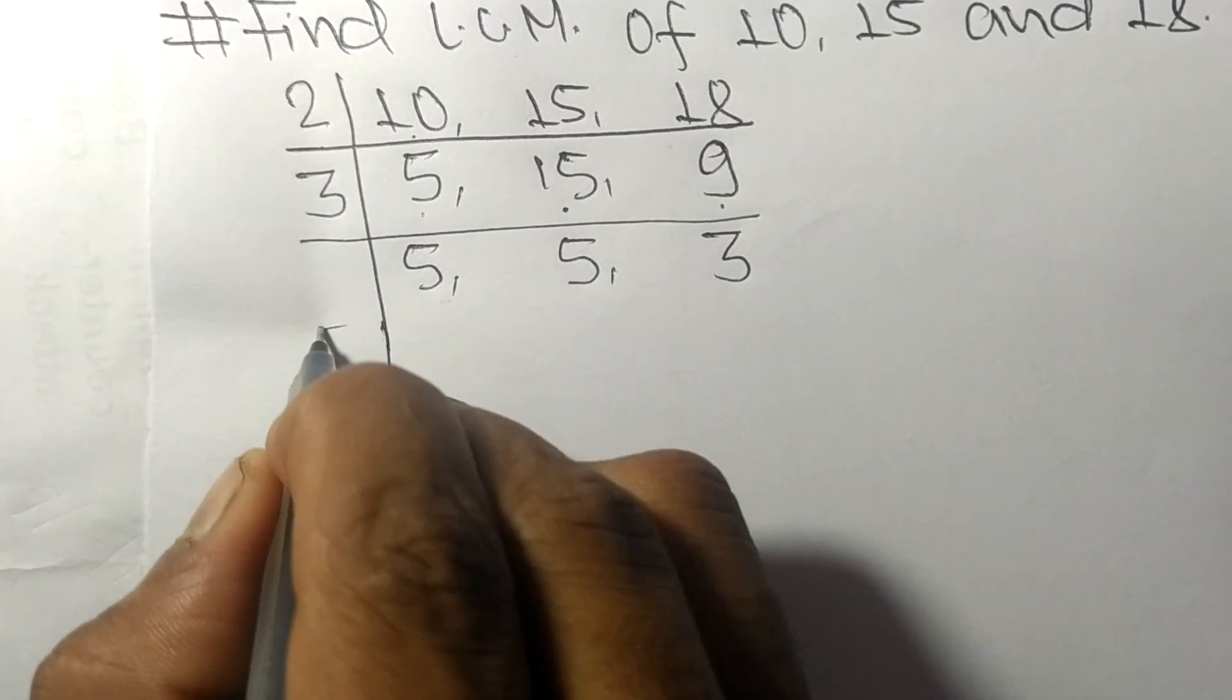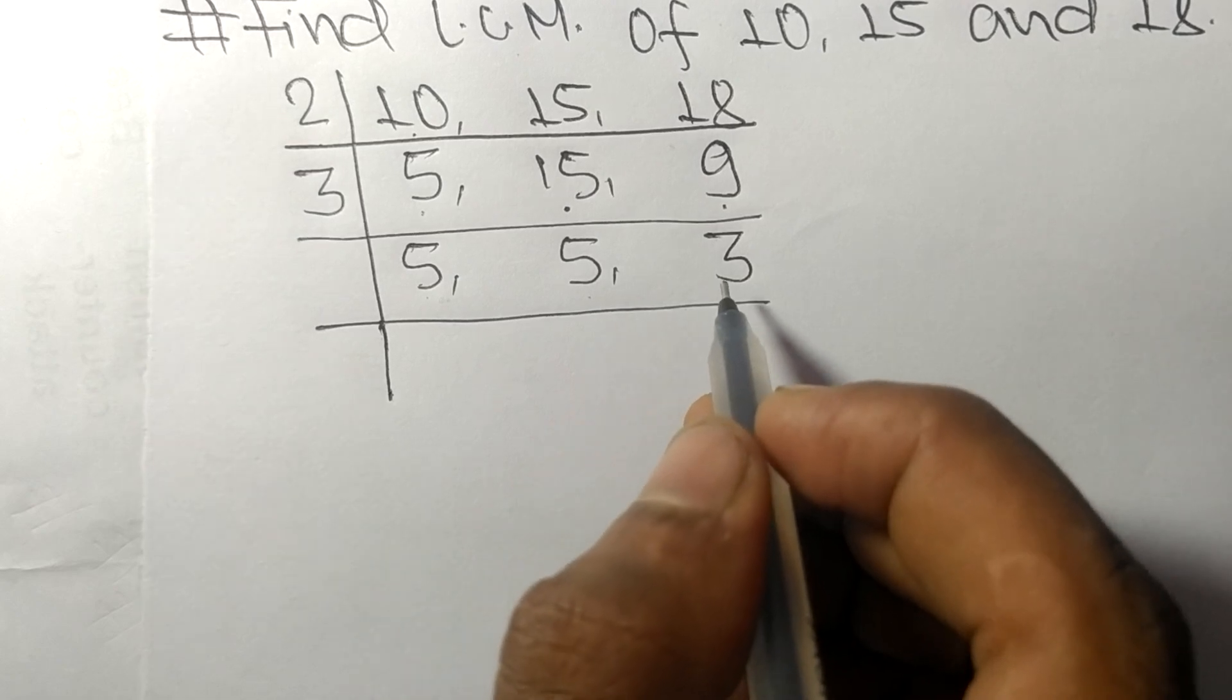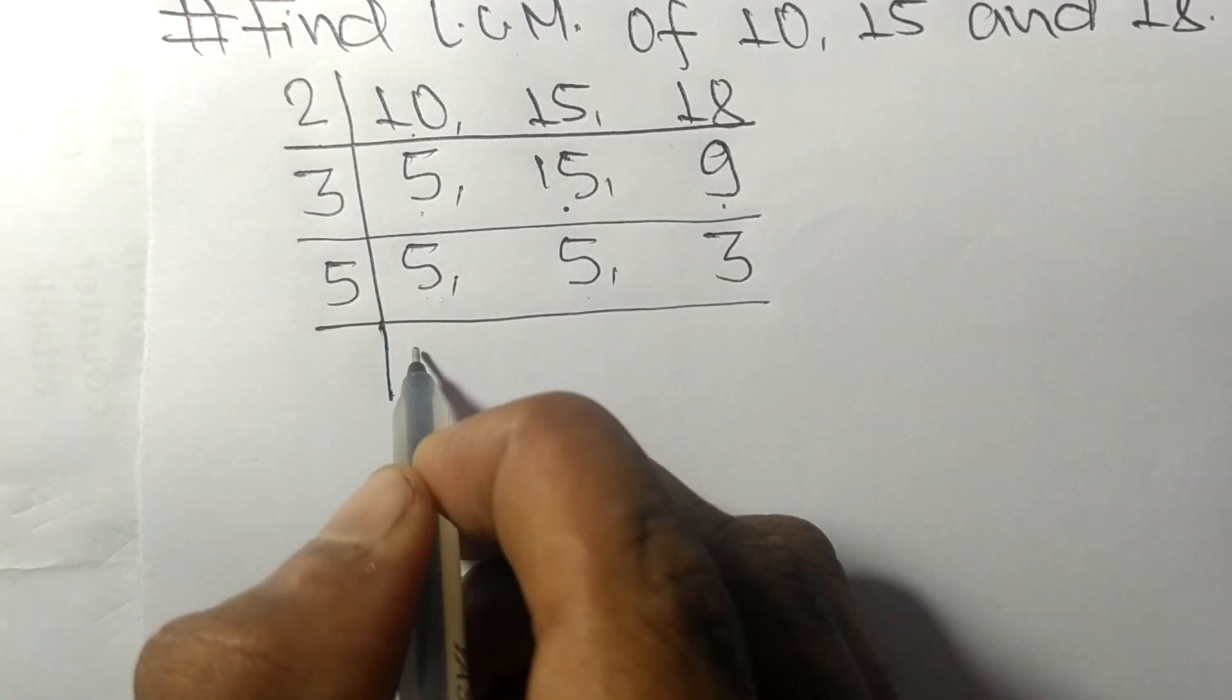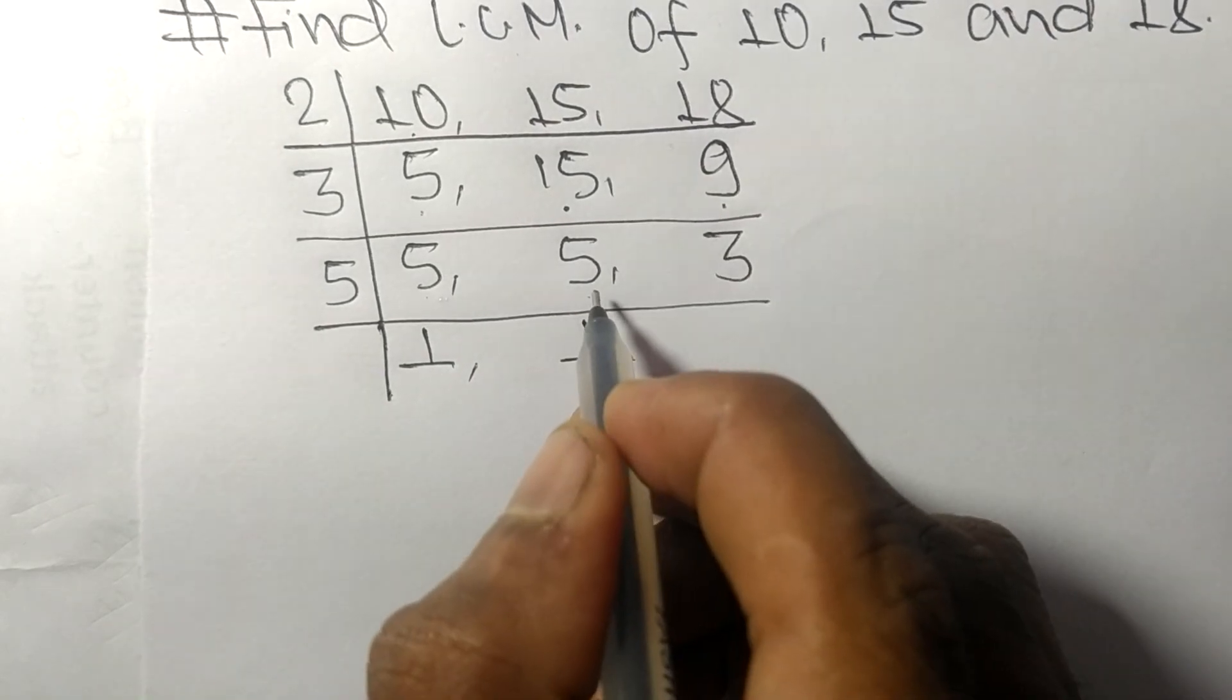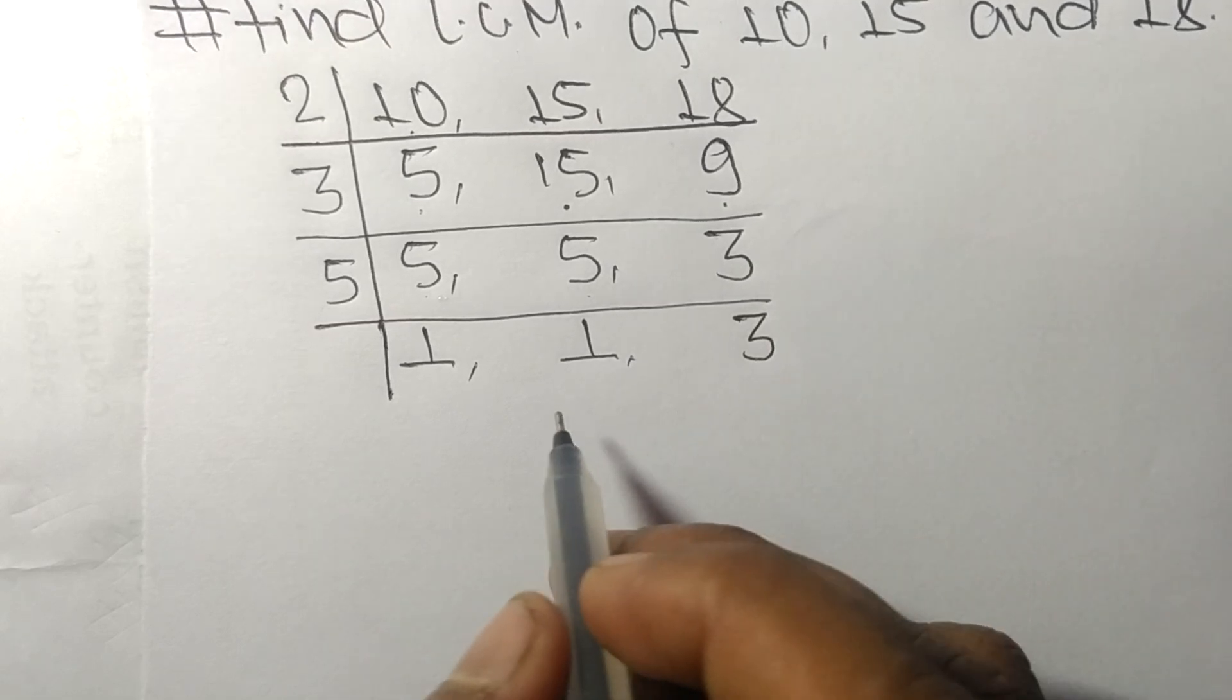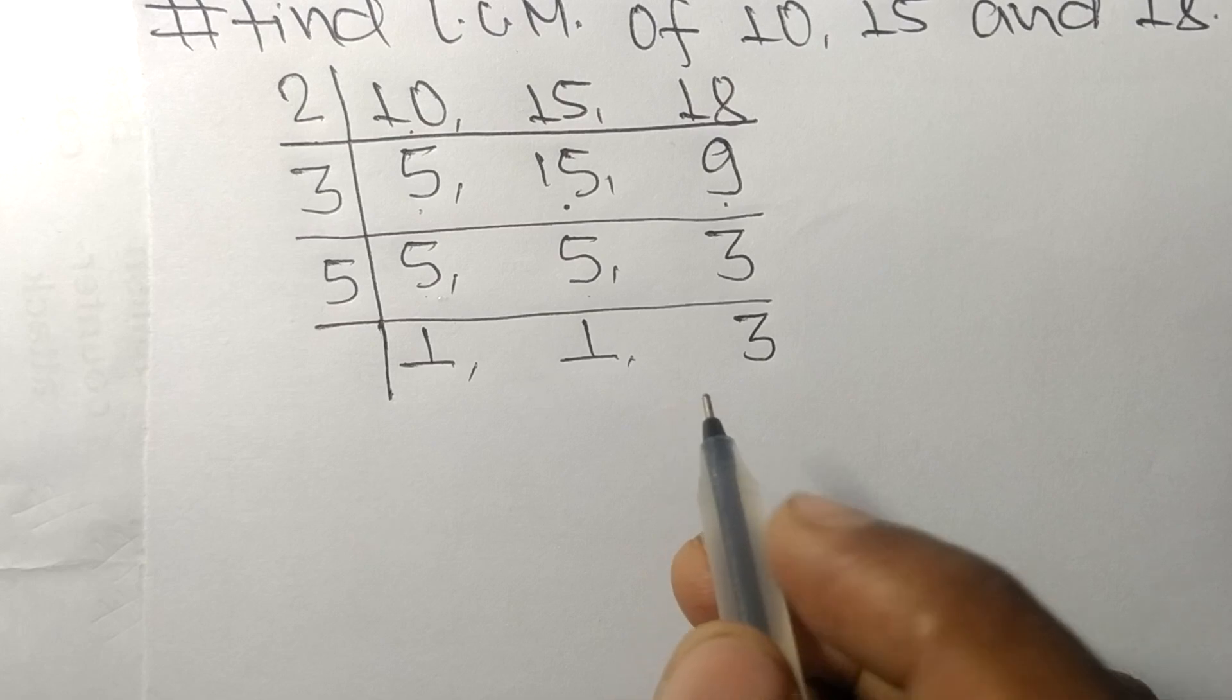So now we got 5, 5, and 3 which are exactly divisible by 5. 5 times 1 means 5, 5 times 1 means 5, 3 not divisible so it is same. So now these numbers are not exactly divisible by the same number.